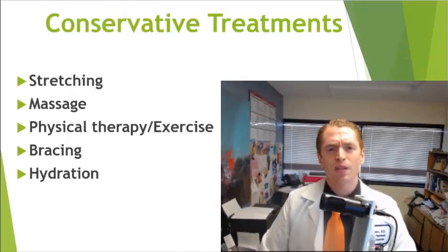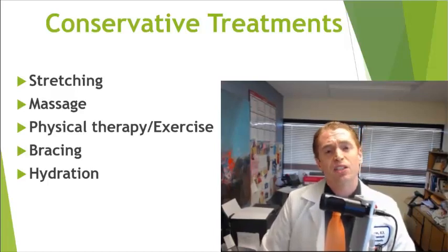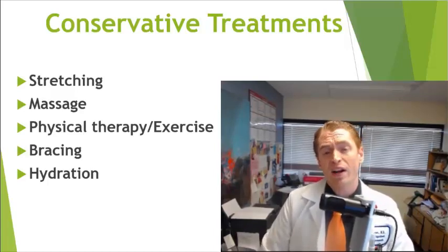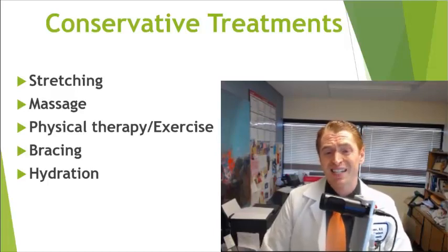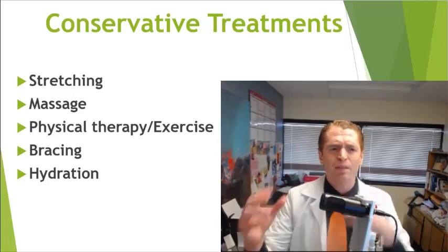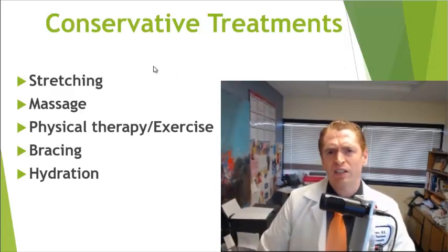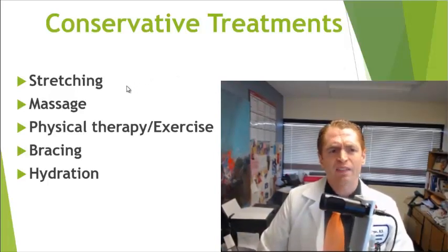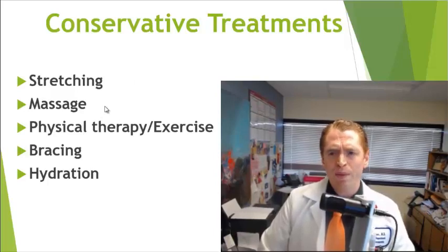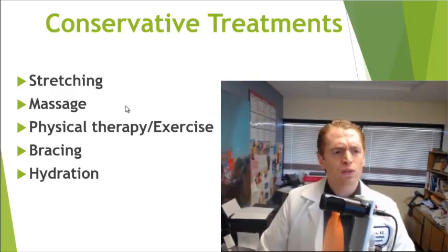I want to start with some conservative treatments, which really everyone with spasticity should be doing because there's really no risk, and they're very underrated and can be quite effective over time. With chronic spasticity, you can get some tightening and shortening of the muscles, so it's very important to stretch regularly to maintain normal muscle length. Massage can be very effective — warming and loosening the muscles — and it's really use it or lose it.